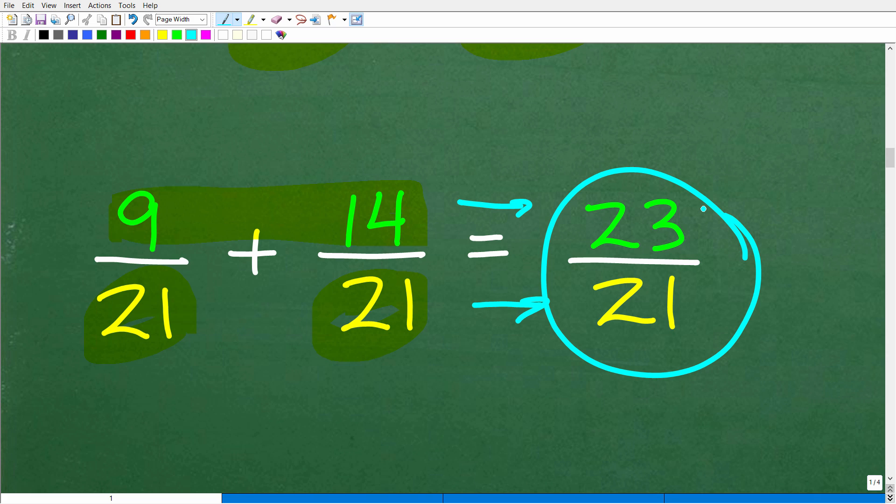Because we have the same denominator, all we have to do is add the numerator. 9 plus 14 is 23, and this will be 23 over 21. This is basically how you add and subtract fractions. This is what we call an improper fraction. This is a little bit of work to do this problem. And this is why people would be like, yes, show me the shortcut, Mr. YouTube Math Man.